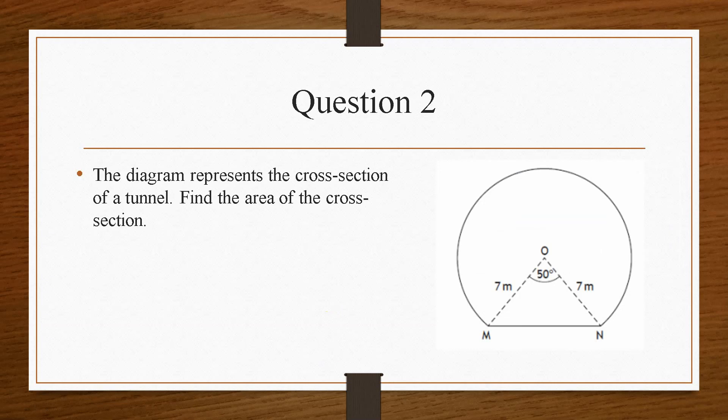Now, question 2 is a previous past paper question, and one that caused a fair few complications, in that this combines the sector area with an area of a triangle as well, which I'll also include a video on how to solve those kind of problems in the description below. But if we take a look at this, it says find the area of the cross section, which is a tunnel.